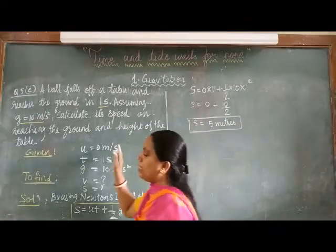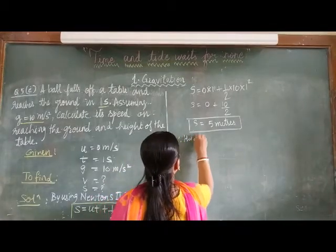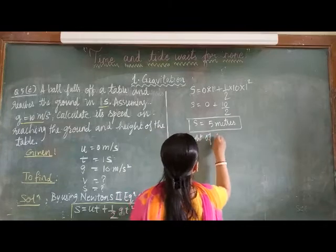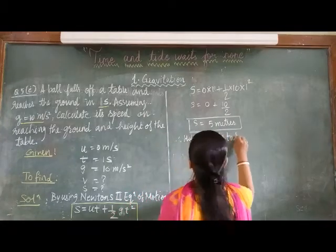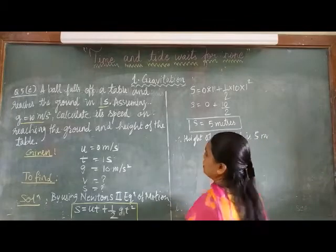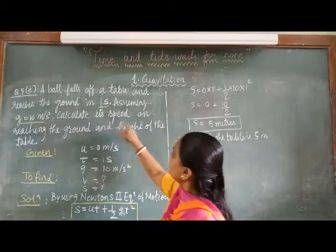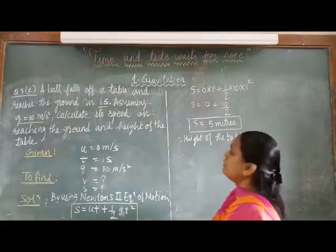This is your answer. That is the height of the table. So, I can write, therefore, height of the table is 5 meters. Now, we have to find its velocity V.